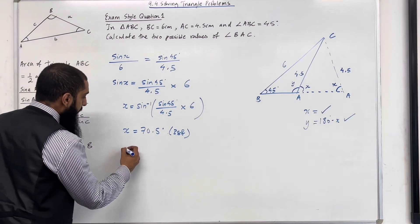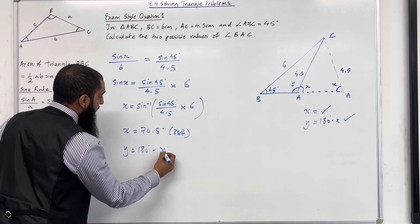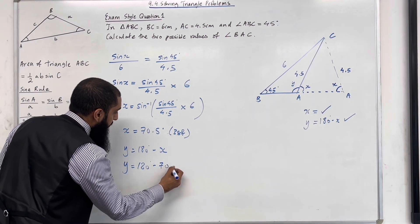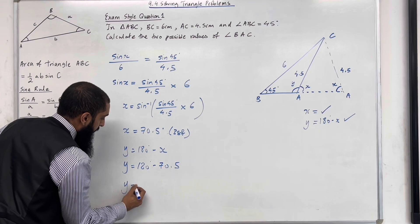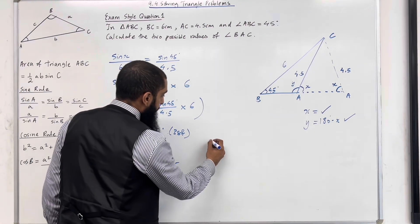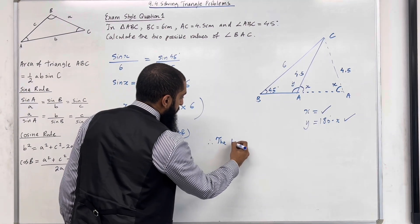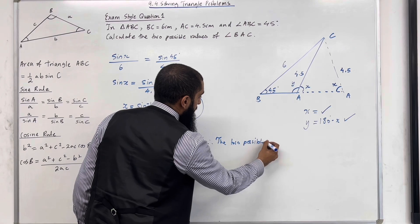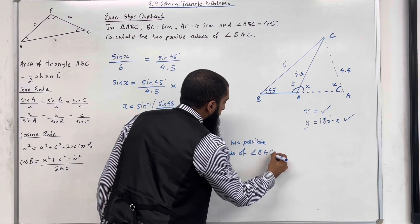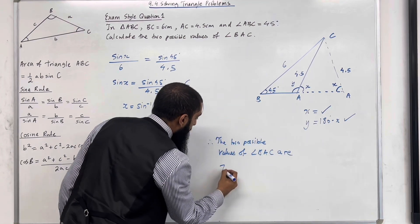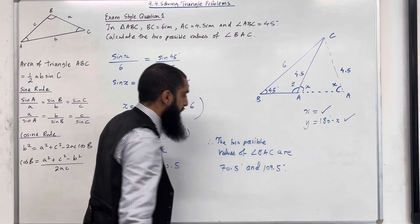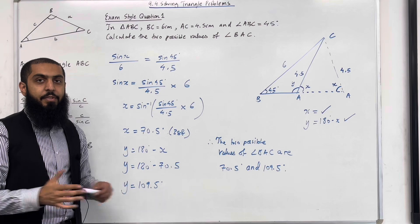Now to work out Y, we do 180 degrees take away X. So Y equals 180 degrees take away 70.5, hence Y equals 109.5 degrees. Therefore, the two possible values of angle BAC are 70.5 degrees and 109.5 degrees. That completes exam-style question 1.